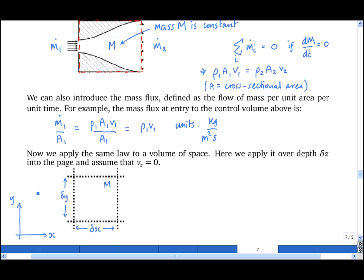I'll start by considering just the flow in the horizontal direction, the x direction. The flow into the control volume along the left-hand face is equal to rho, the density at that position, times vx, the velocity in the x direction, times delta y.